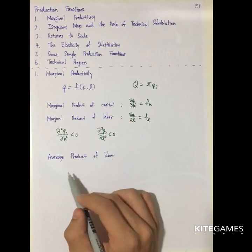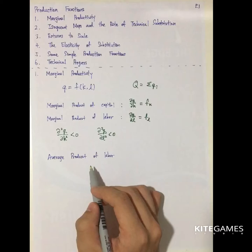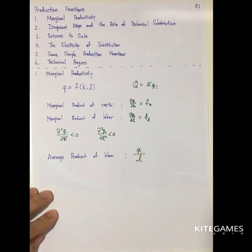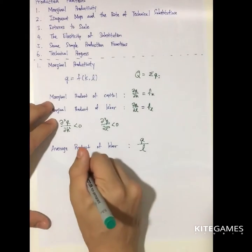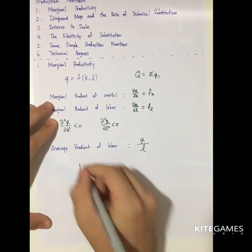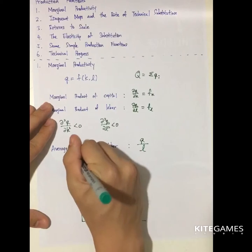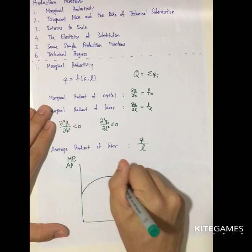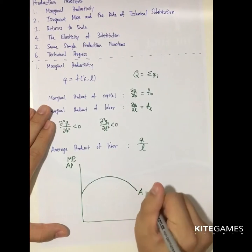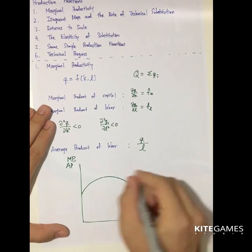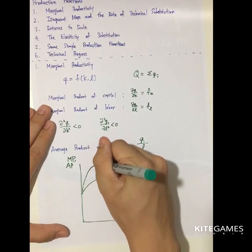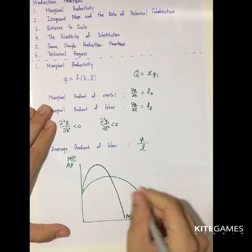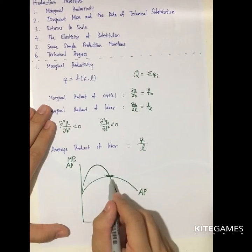Another concept is called the average product of labor, defined as output divided by the number of labor. So in your basic micro, you may have learned that the average output is something inverted U-shaped, while the marginal output is shaped like this, and they will intersect at the maximum point of the average product.